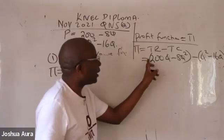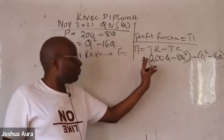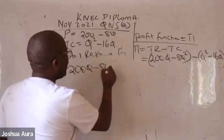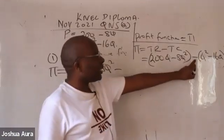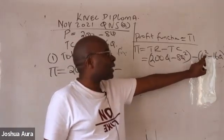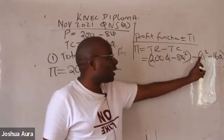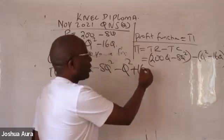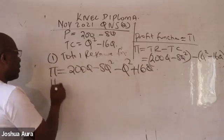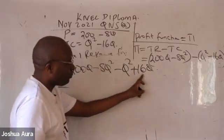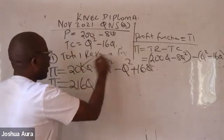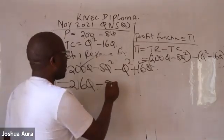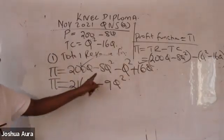There is an implied positive outside the first bracket, so the terms remain with their signs: 200Q minus 8Q squared. Then there is a negative outside the second bracket, so the signs of those terms change — Q squared becomes minus Q squared, and minus 16Q becomes plus 16Q. Putting like terms together: 200Q plus 16Q gives 216Q, and minus 8Q squared minus Q squared gives minus 9Q squared.